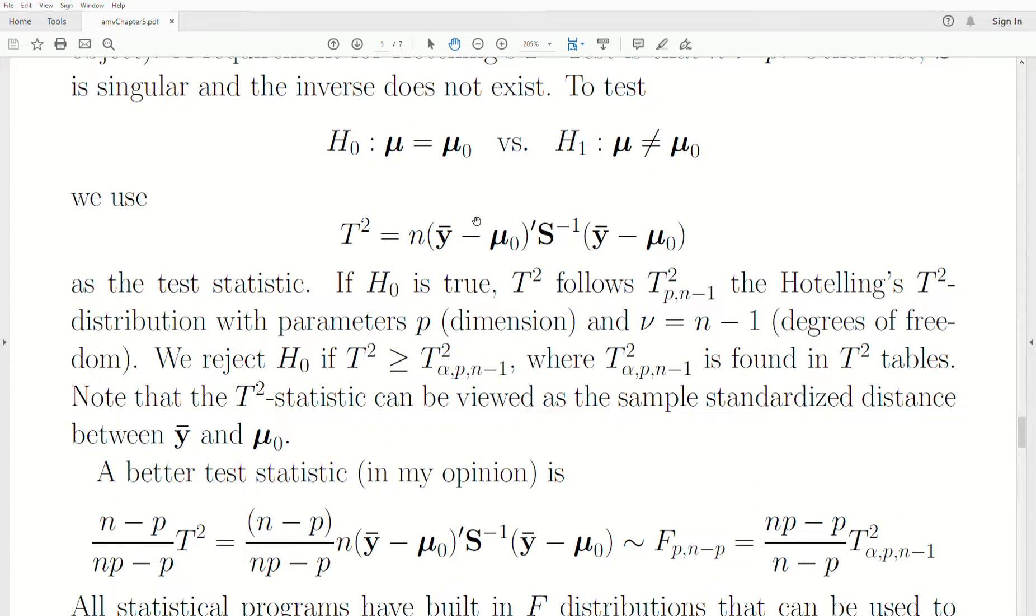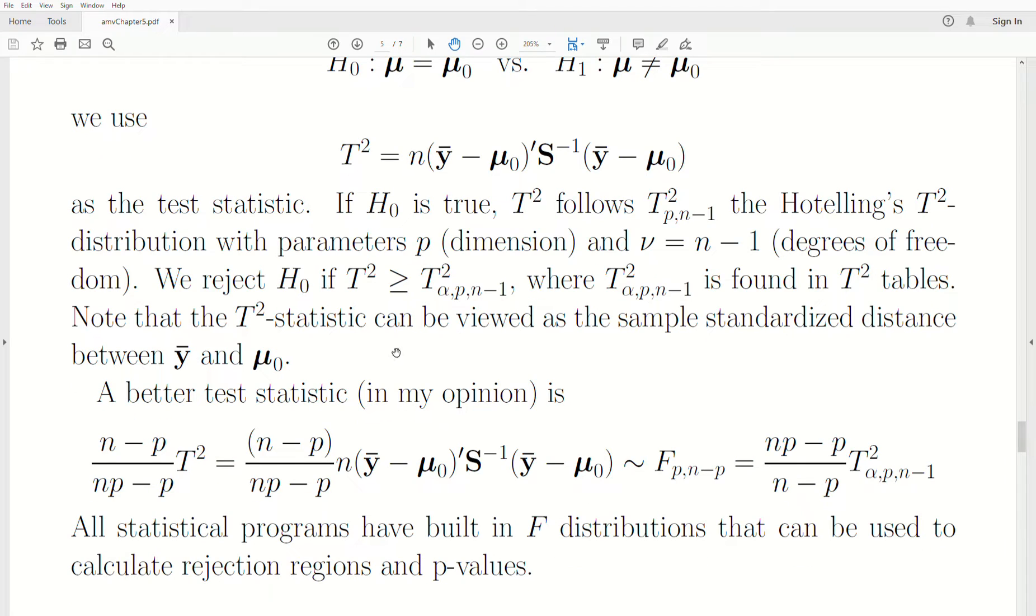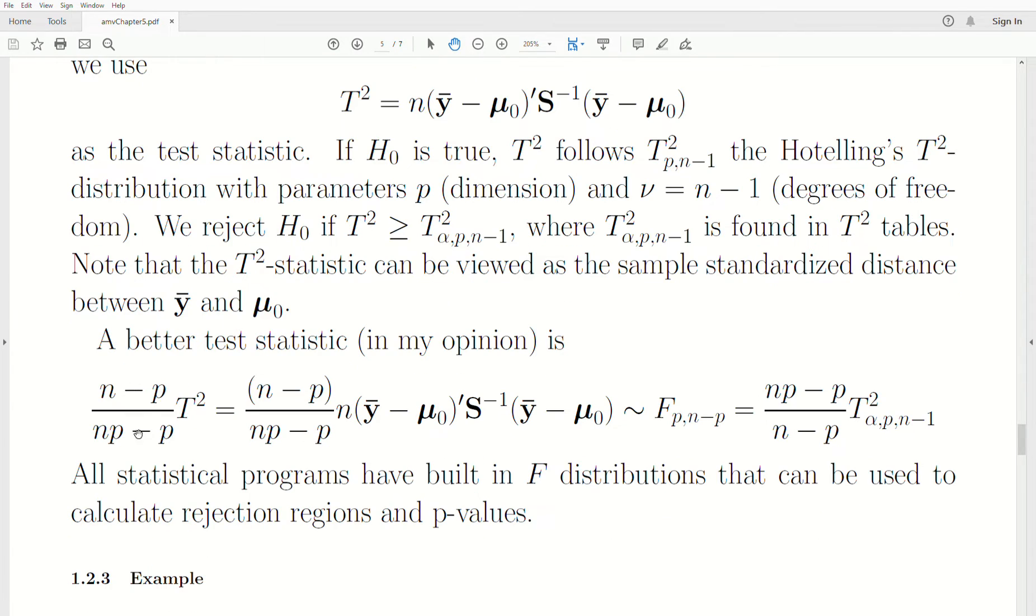This is Hotelling's T². But, in my opinion, there's a better way to do this, a better test statistic. There's actually some books that just teach that this is the Hotelling's T². What it is, it's this T² value, so it's a Mahalanobis distance between the sample mean vector and the population mean vector, or hypothesized population mean vector, times this constant, n minus p, divided by np minus p. This is distributed with an F-distribution, with numerator degrees of freedom, p, and denominator degrees of freedom, n minus p. There's a connection between the Hotelling's T² critical value, or rejection region, and this F. It's a constant times that Hotelling's T².